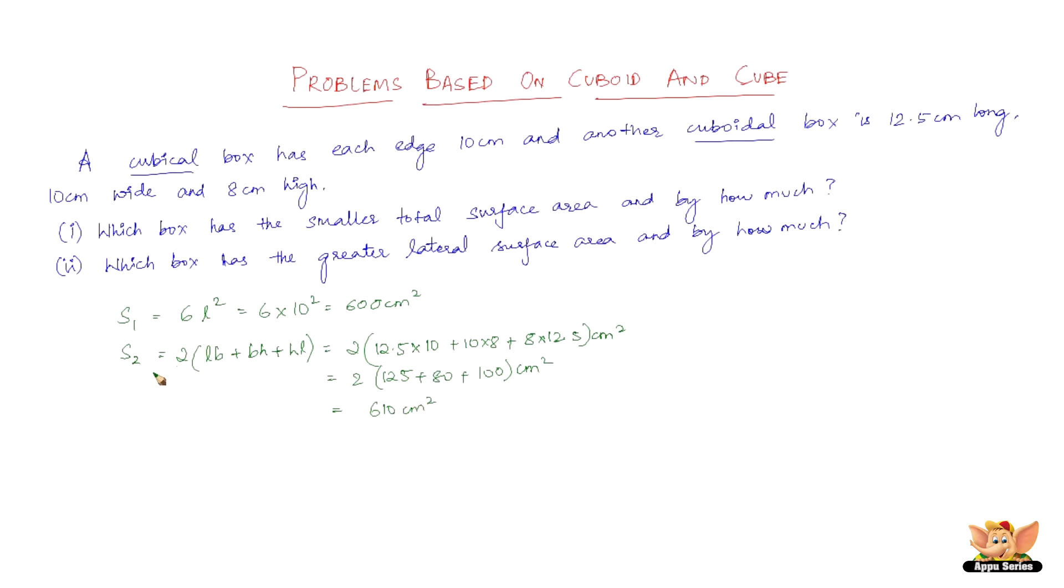So, now, the greater of this is the cuboid. Now, which box has a smaller total surface area? The answer is cubical box. And by how much? 610 minus 600. That is, S2 minus S1 which is 610 minus 600. So, 10 cm square is the difference in the surface area between the cubical box and the cuboid box.